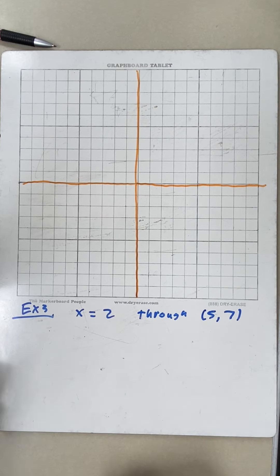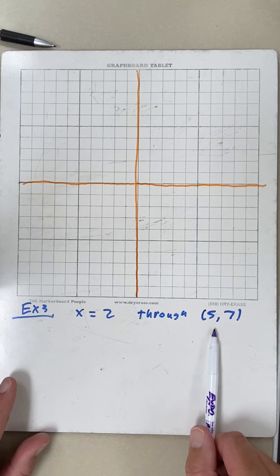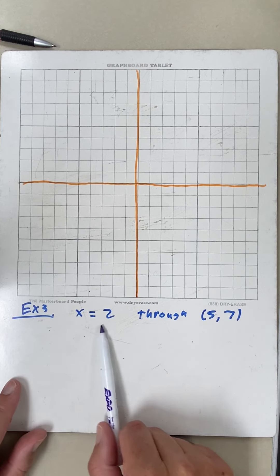All right, same directions as last time. We want a line perpendicular to this one that goes through this point. Well, this time, notice there's only one letter.